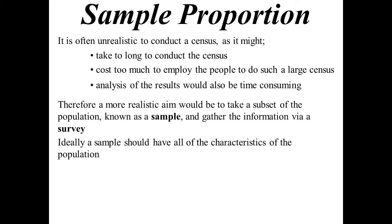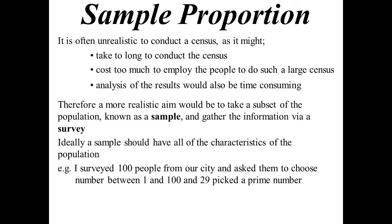What actually happens in reality is we don't often do census. We just conduct a sample. When we're sampling, it's no longer a census. That's what we call a survey. I surveyed 100 people from our city. I asked them to pick a number between 1 and 100. It ended up coming back 29 came back with a prime number. So the sample proportion, the sample proportion is not the theoretical probability. It's what I got back from my survey. So 29 out of 100, 0.29 would be the sample proportion.